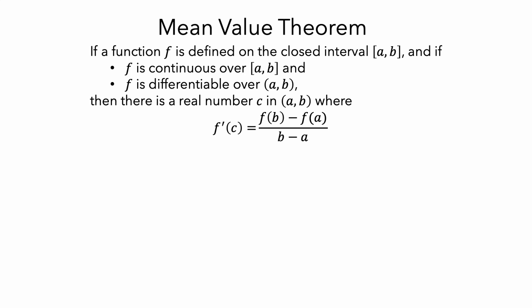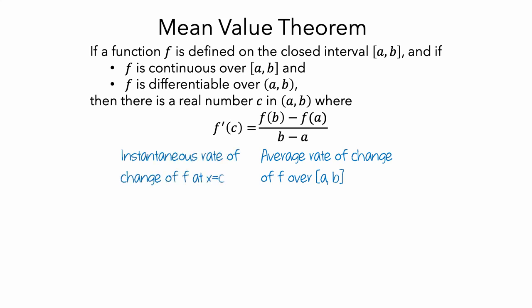What is this saying? Let's break it down a bit. On the right side of the equation, the difference quotient represents the average rate of change of f over the interval from a to b. And on the left side, this is the instantaneous rate of change of f at x equals c. The theorem is saying that if the two conditions in the list are met, there is some value of c where the instantaneous rate of change is equal to the average rate of change.